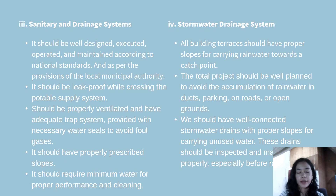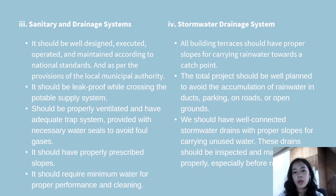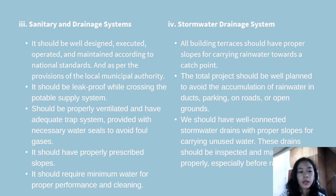For the sanitary and drainage system, the plumber must have enough knowledge about sewerage systems. The system should be well designed, executed, operated, and maintained according to national standards and as per the provisions of the local municipal authority. It should be leak-proof while crossing the potable supply system, properly ventilated, and have an adequate trap system with necessary water seals to avoid foul gases. It should have properly prescribed slopes and require minimum water for proper performance and cleaning.